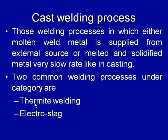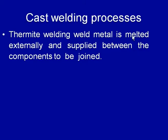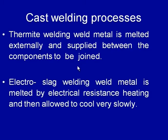In thermite welding, the weld metal is brought to the molten state through a chemical reaction outside the weld joint and then poured or supplied between the components to be joined. In electroslag welding, the molten weld pool is developed between the components through electrical resistance heating, but the cooling conditions are very slow, similar to casting — that is why it is placed under cast welding processes. These conditions are similar to those of castings.